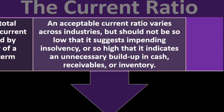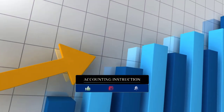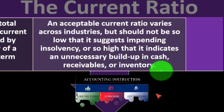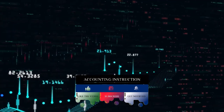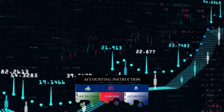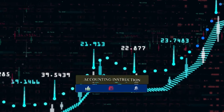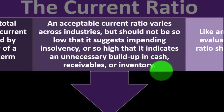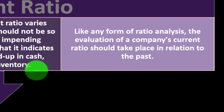The current ratio should not be so low that it suggests impending insolvency, nor so high that it indicates an unnecessary buildup of cash, receivables, or inventory. A very high ratio suggests the company is mismanaging cash — it should be investing in inventory, machinery, or returning money to owners as dividends. Like any ratio analysis, evaluation of a company's current ratio should take place in relation to its historical performance.